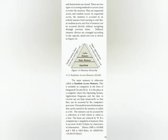A memory is just like a human brain. It is used to store data and instructions. Computer memory is the storage space in the computer. When data and instructions are stored, there are two types of accessing methods: sequential access and random access. In sequential access, the memory is accessed in an ordered manner from start to end. In random access, any byte of memory can be accessed directly without navigating through the previous bytes.